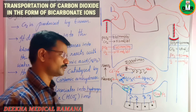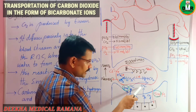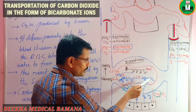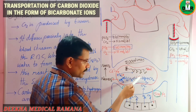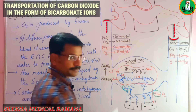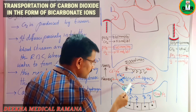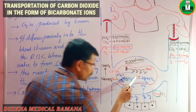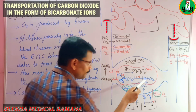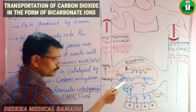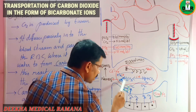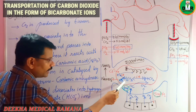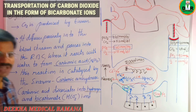When carbon dioxide enters the RBC, it immediately reacts with water to form carbonic acid. This reaction is facilitated by an enzyme called carbonic anhydrase. The carbonic acid then immediately dissociates into H⁺ (hydrogen ions) and HCO₃⁻ (bicarbonate ions). Carbonic anhydrase plays a very important role in this dissociation reaction as well.